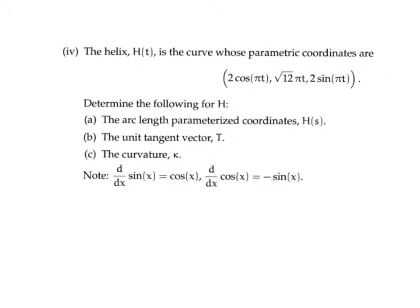The helix H of t is the curve whose parametric coordinates are 2cos(πt), √12·πt, 2sin(πt). Determine the following for H: the arc length, the unit tangent vector, and the curvature k.